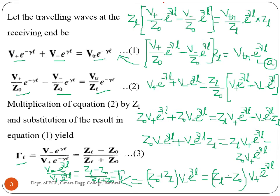In terms of impedances, Z_L is the load impedance and Z0 is the characteristic impedance. V+ and V- are the complex quantities of the incident and reflected amplitudes respectively. V_TR is the amplitude of the transmitted voltage.